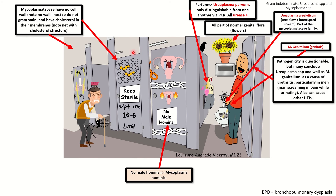The pathogenicity of these bugs is questionable, but many conclude that ureaplasma as well as M. genitalium are a cause of urethritis, particularly in males — so we have this male urinating into this bowl while screaming in pain. They also can cause other UTIs.